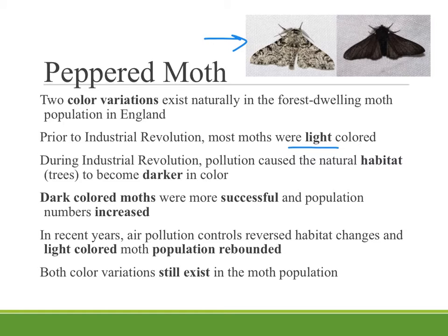During the Industrial Revolution, factories produced lots of pollution and soot-laden air, and the trees actually became darker in color — dirty from the pollution collecting on the bark. So the dark-colored moths became more successful; they were the ones that could hide on these darker trees and not be eaten. They were able to breed and produce more dark offspring, and the population numbers of dark moths increased.